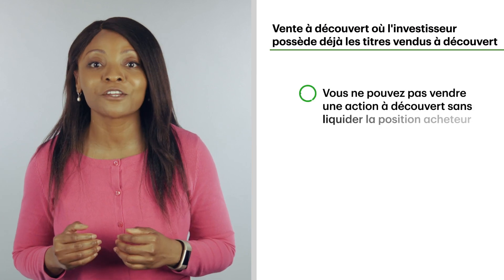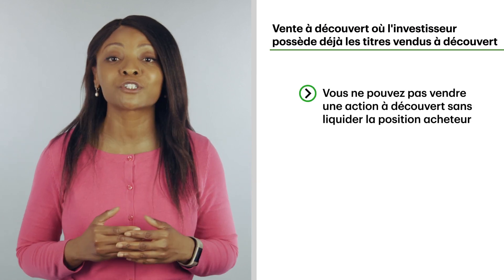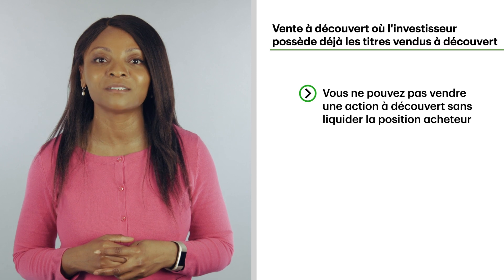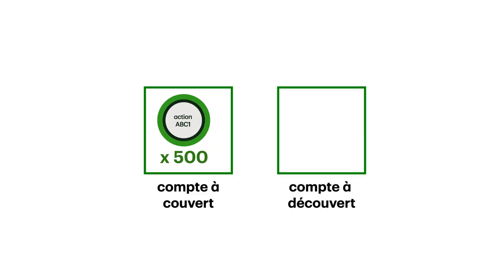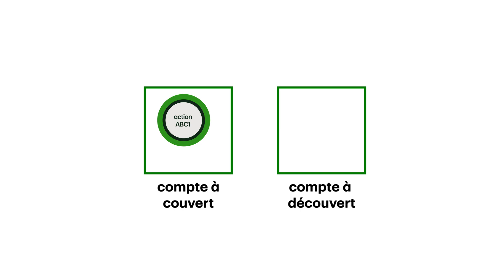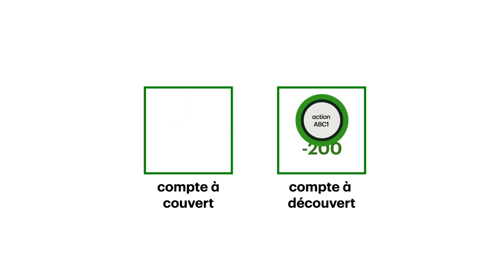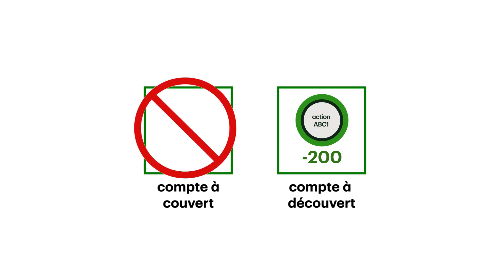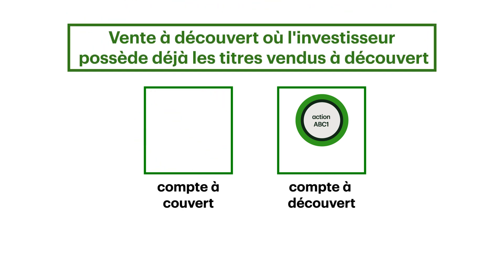When you hold a stock long in your account, you can't short the same stock until you've closed out your long position. For example, if you have 500 shares of ABC on the long side, you're not able to short any shares of ABC until you sell that long position first. The reverse also applies: if you're shorting 200 shares of ABC, you can't go long on that stock until those 200 shares are covered first. This practice is called shorting the box. Now you can see how short selling can affect your margin account.